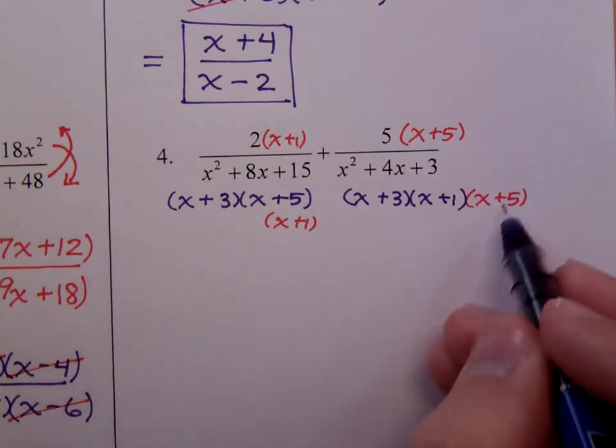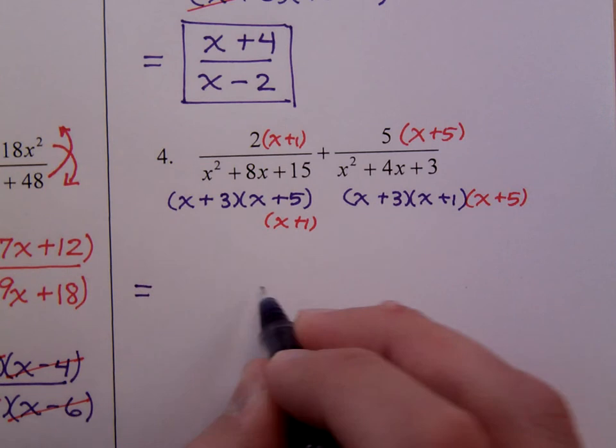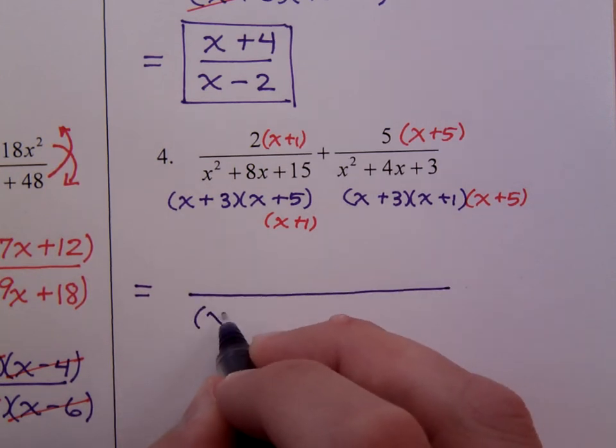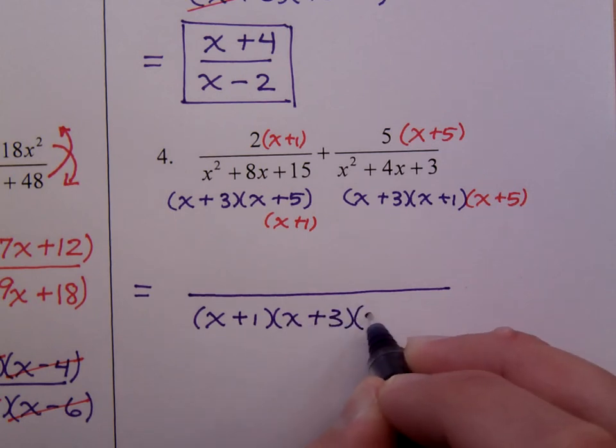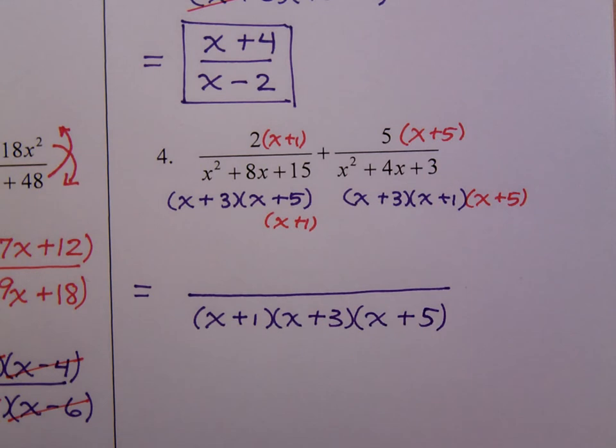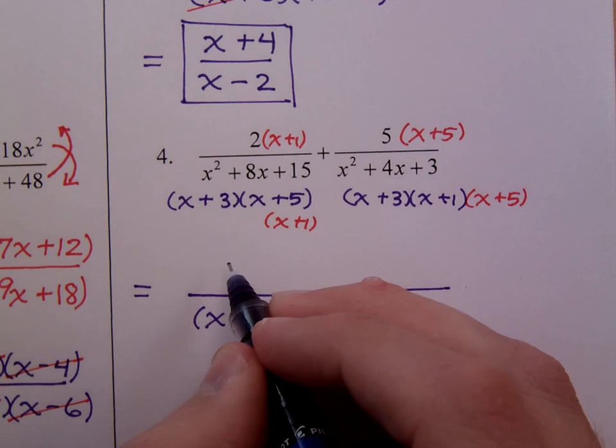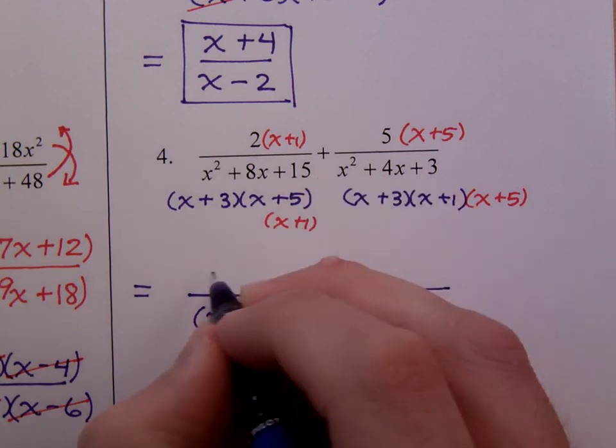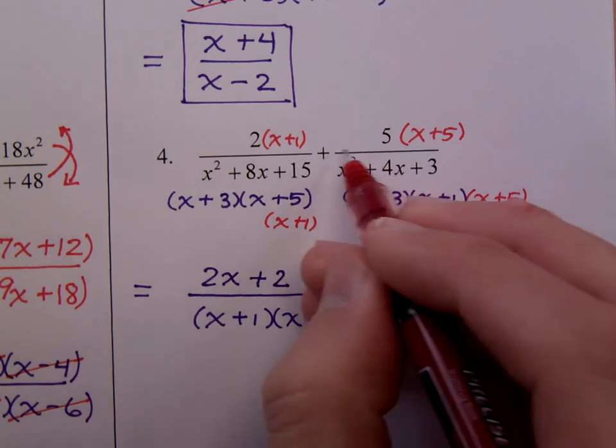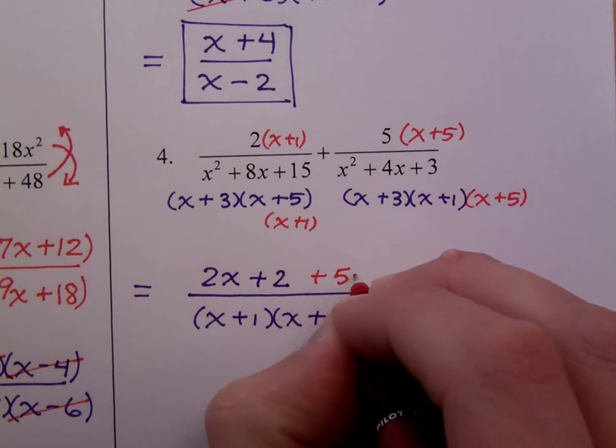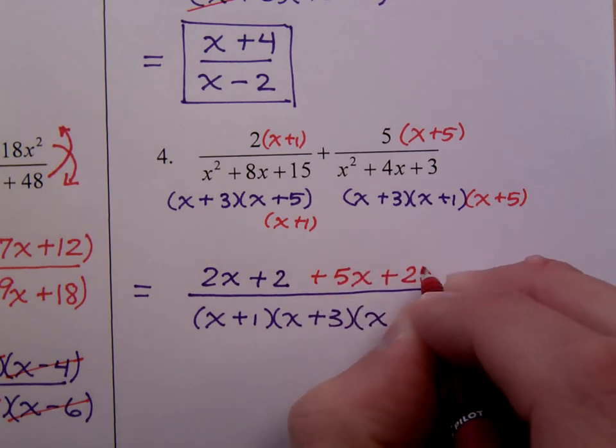Now everybody has the same 3 factors for that common denominator. The order of these factors doesn't really matter because they're all connected through multiplication. Sometimes I put mine in order like this, 1, 3, and 5, so I know I'm getting everybody there. In the numerator, you have to multiply this stuff out. Just like in the last problem, there was a negative to distribute. Here I get 2x plus 2, and then here when I distribute, I get 5x plus 25.